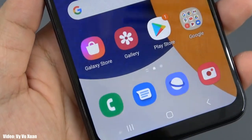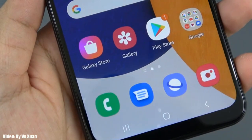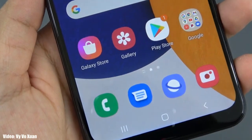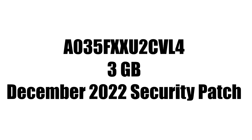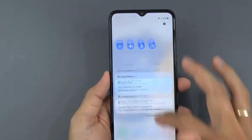Android 13 is out for the A03 and you can check for the update by going into Settings, About Phone, and then the Software Update menu. Right now there's no actual screenshot of the update, but the firmware version number is available, the size will be around 3 GB, and it will have the December 2022 security patch.